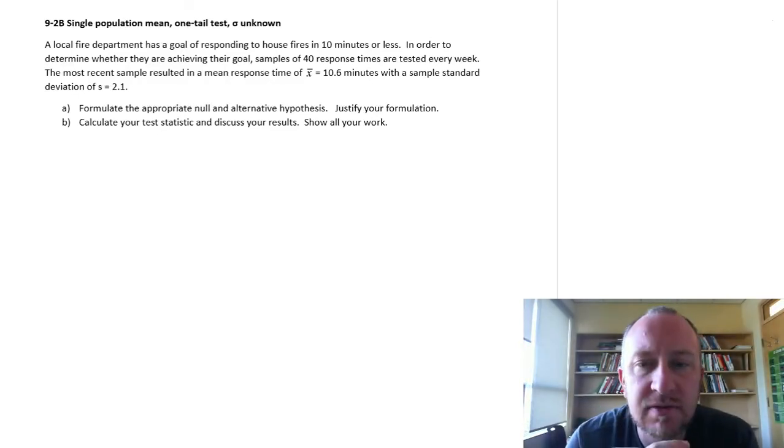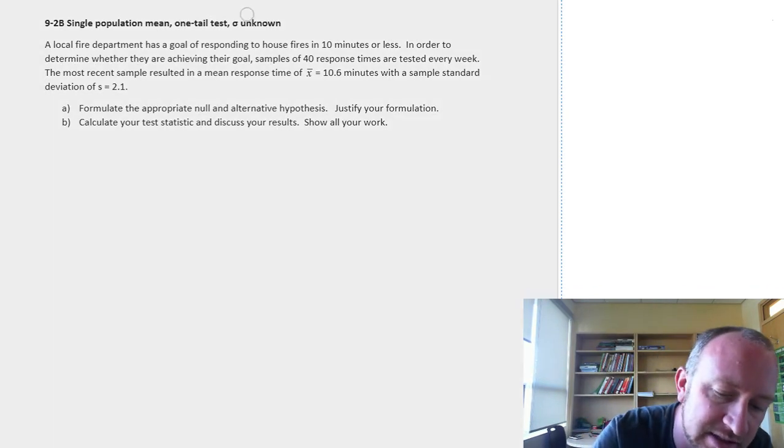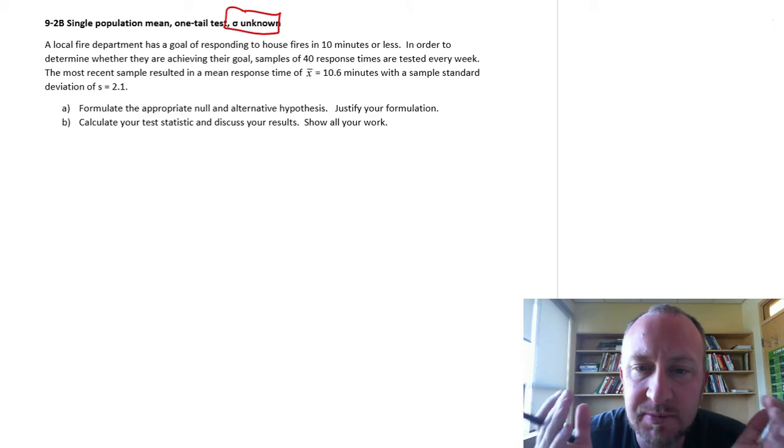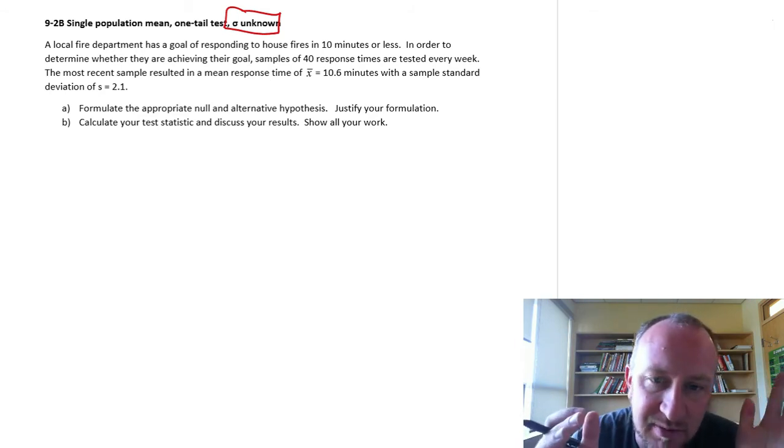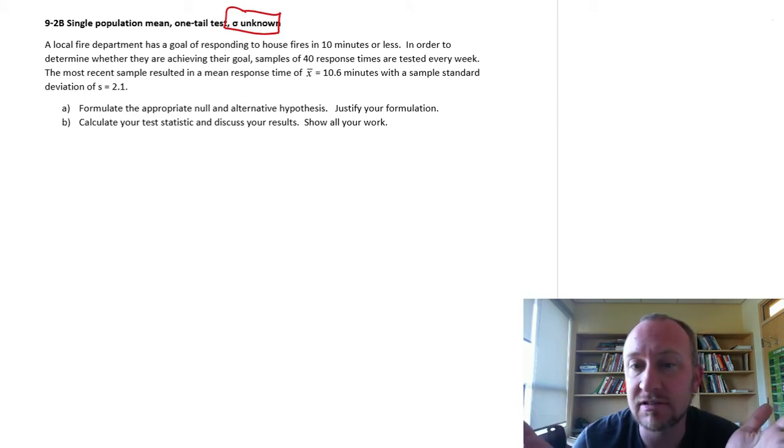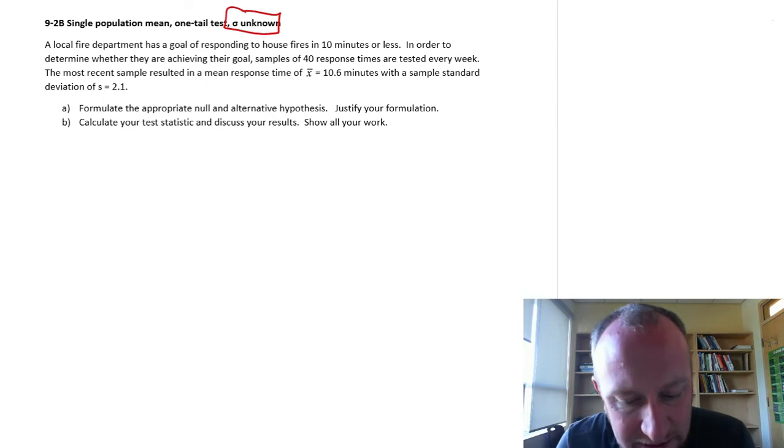Hello and thank you for watching another video here. We're going to look at another single population hypothesis test on a mean and sigma is unknown. So because that standard deviation is unknown, the only difference between this test and the other ones that we've done where we knew the standard deviation is that now we have to use the t-distribution instead of the z-distribution. So let's get into it.